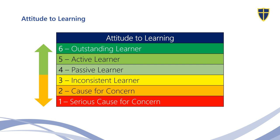One of the most important pieces of information we provide alongside working at grade is the attitude to learning score. For every single subject, each student is ranked one to six. This attitude to learning score tells you as a parent how well they're engaging within the subject and how well they're demonstrating the values we expect to see from children here at Bluecoat. If your child is achieving a score of between four to six, there is very little concern — that's the type of score we expect to see of most learners. If students are achieving three or below — so inconsistent down to cause of concern — staff are likely to provide you with additional information on the data report.